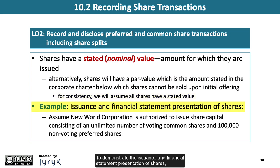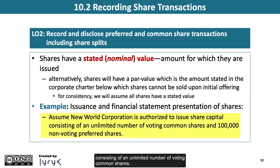To demonstrate the issuance and financial statement presentation of shares, let's assume that New World Corporation is authorized to issue share capital consisting of an unlimited number of voting common shares, and 100,000 non-voting preferred shares.